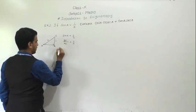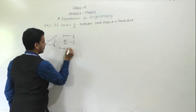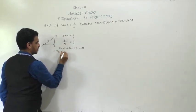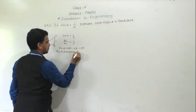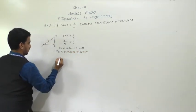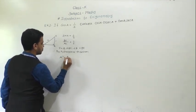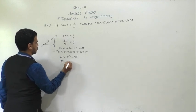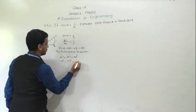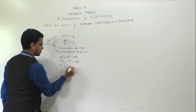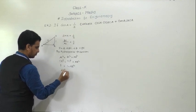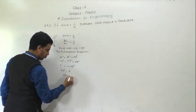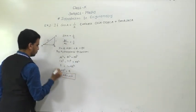In triangle ABC, angle B equals 90 degrees. By Pythagoras theorem: AC² = BC² + AB². So 3² = 1² + AB², giving 9 = 1 + AB². Therefore AB² = 9 - 1 = 8, so AB equals √8, which is 2√2.